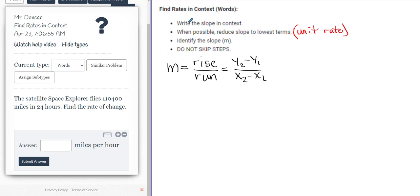Last set of problems: finding rates in context. We're dealing with words, so we've got a few more steps. Write the slope in context. When possible, reduce the slope to lowest terms. In other words, we want to have a unit rate - it's going to be per something, a one in the denominator. We want to identify the slope and do not skip steps.